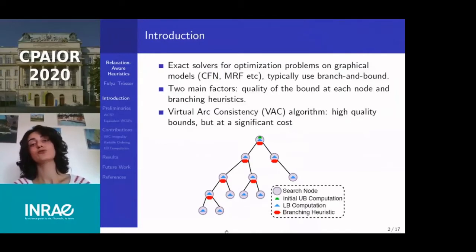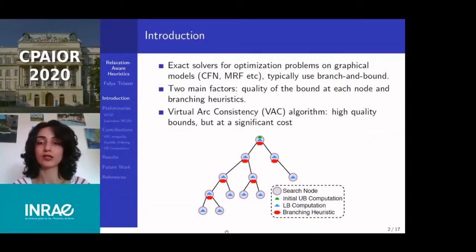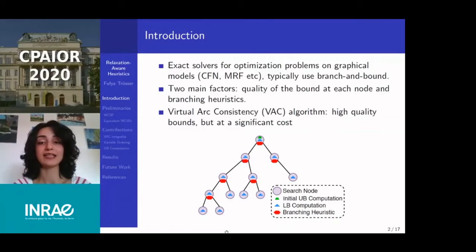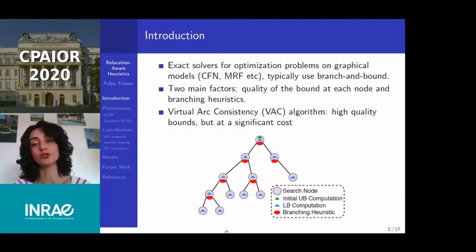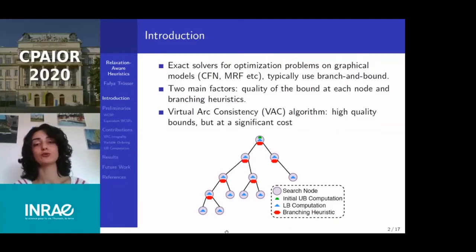Exact solvers for optimization problems on graphical models, such as cost-function networks and Markov random fields, typically use branch and bound. The efficiency of the search relies mainly on two factors: the quality of the bound computed at each node of the branch-and-bound tree, and the branching heuristics which determine on which variable we branch. There is a trade-off between bound quality and computational cost. The VAC algorithm computes high-quality bounds but at significant cost, so it is mostly used in pre-processing rather than at every node of the search tree.